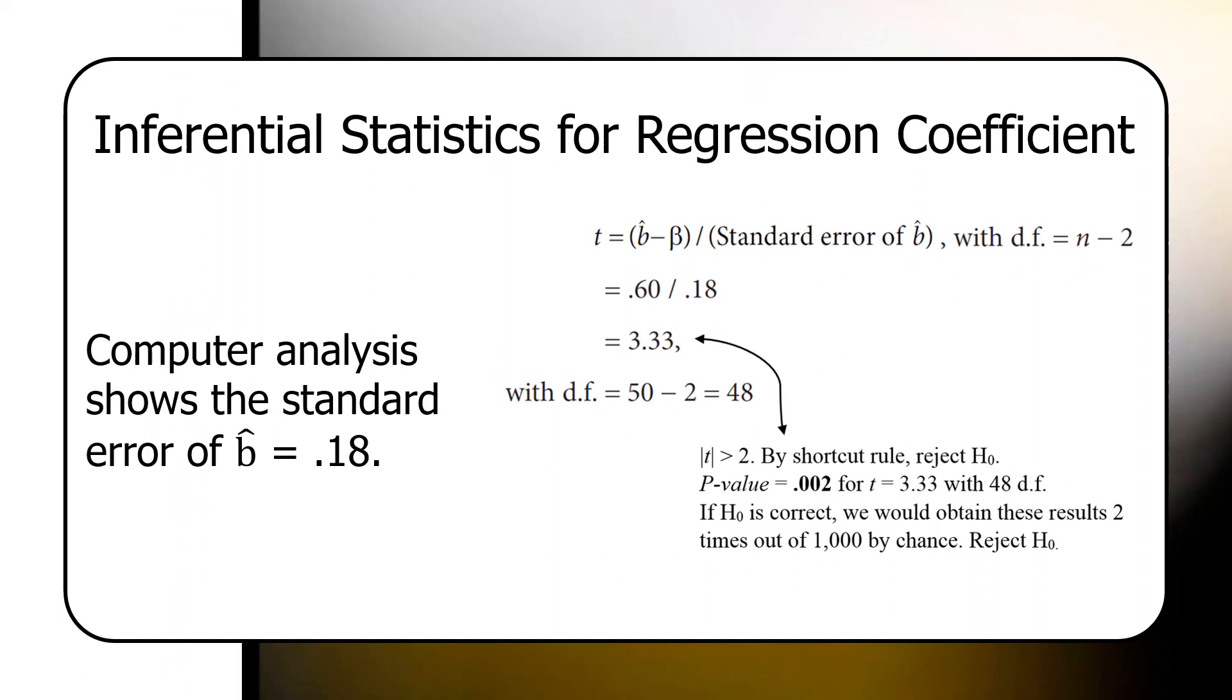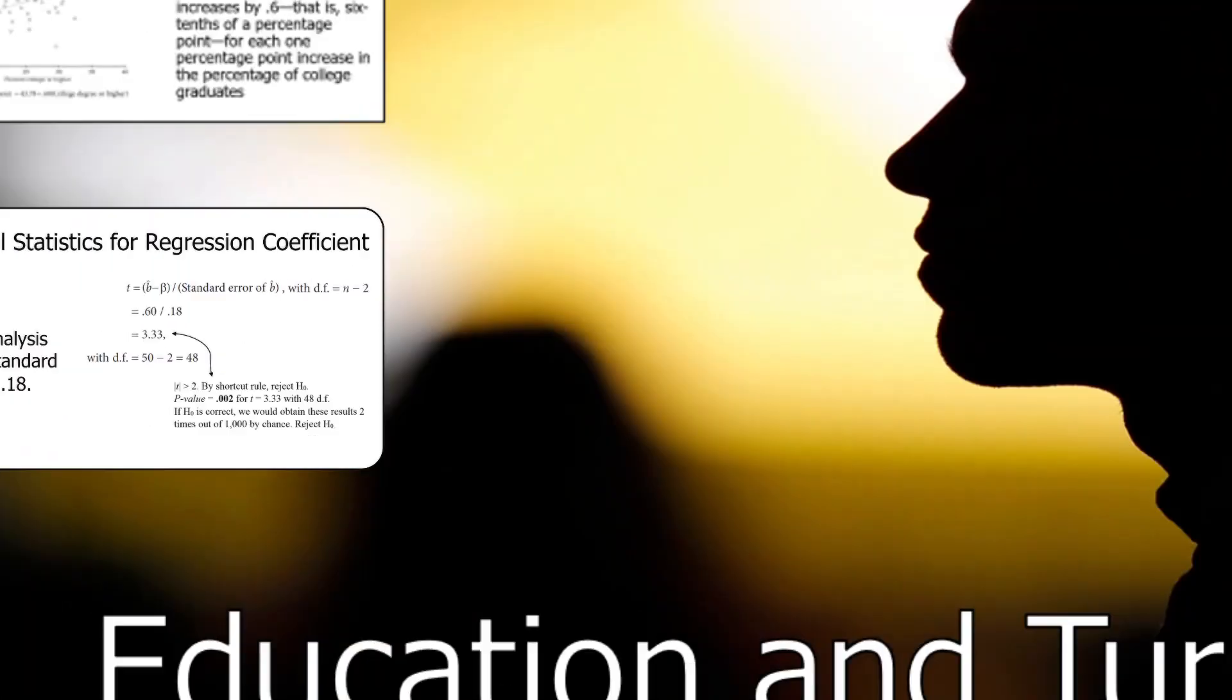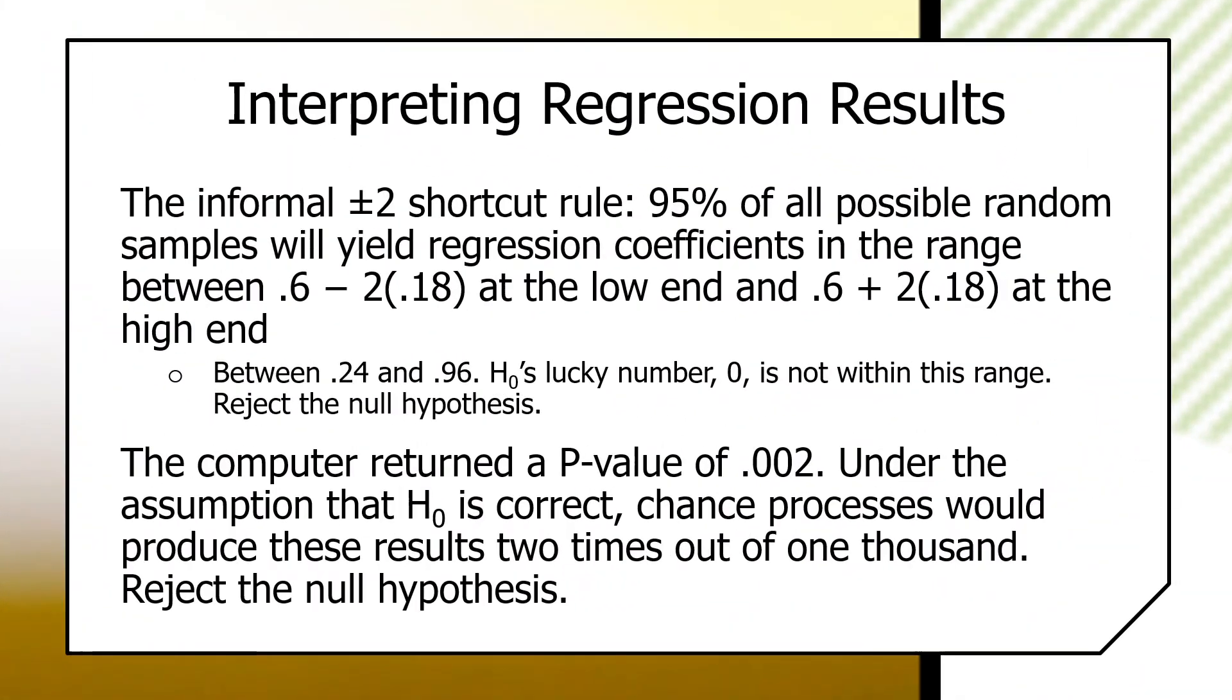So, by the shortcut rule, we can see that even if you give the null hypothesis every opportunity to explain the results, you will go as low as .24 as the value of the regression coefficient. You're not going to go to zero because that represents a very unlikely event.